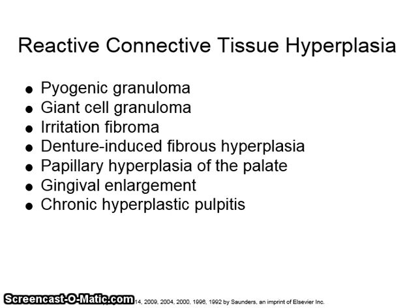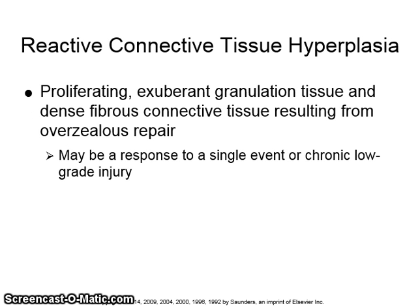Reactive connective tissue hyperplasia includes pyogenic granuloma, giant cell granuloma, irritation fibroma, denture-induced fibrous hyperplasia, papillary hyperplasia of the palate, gingival enlargement, and chronic hyperplastic pulpitis. It is an exuberant overgrowth of reparative tissue and may be a response to a single event or a chronic low-grade injury.